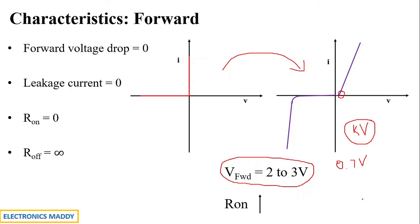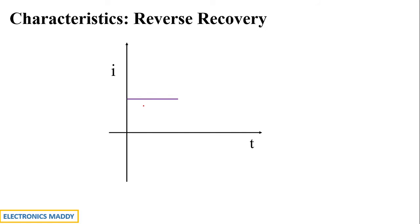Now let us look at the reverse recovery characteristics. Current remains constant while the diode is conducting, but when the diode is turned off or the polarity is reversed, the current immediately reverses direction and continues to flow in reverse for some time. This is due to minority charge carriers present in the power diode, and the time duration for this recovery is called the reverse recovery time.